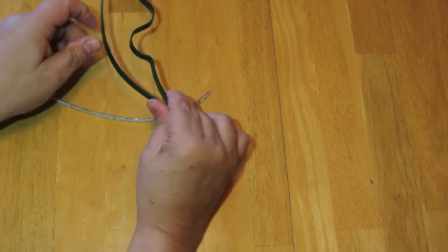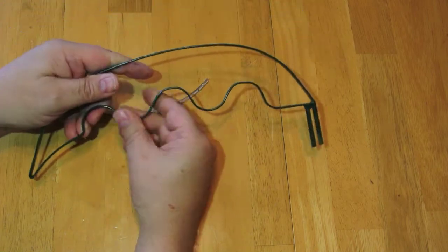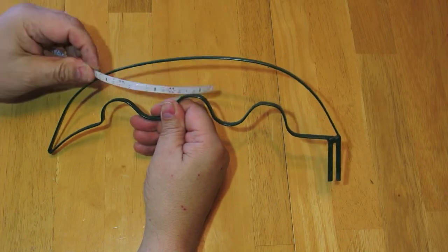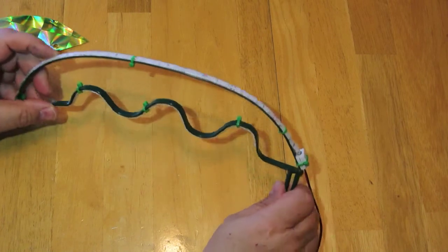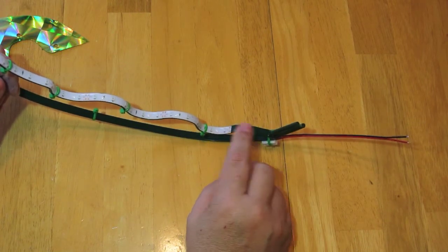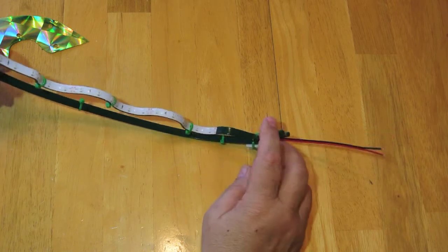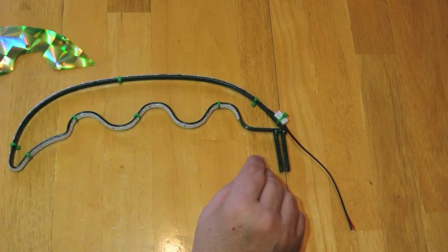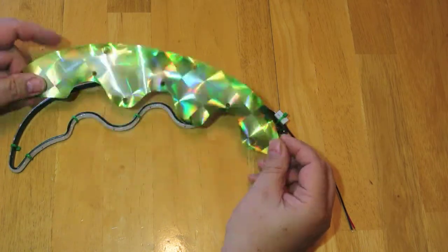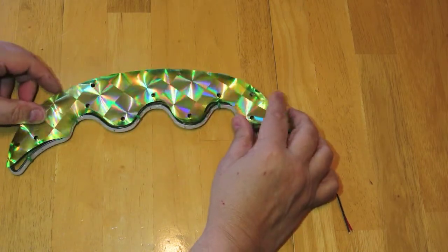We're going to take the four palm fronds and put the green monochrome LED strips on them. Here's a completed frond. I didn't have enough to go all the way to the end here, but I don't think it matters.